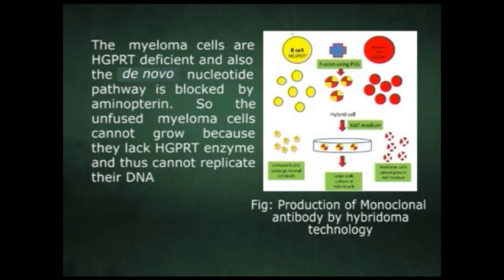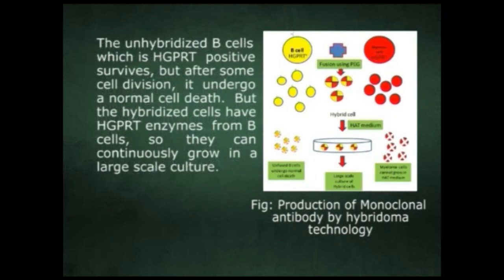The selected medium is HAT medium, containing hypoxanthine, aminopterin, and thymidine. The myeloma cells are HGPRT-deficient, and the de novo nucleotide pathway is blocked by aminopterin, so unfused myeloma cells cannot grow because they lack the HGPRT enzyme and thus cannot replicate their DNA. Unhybridized B cells, which are HGPRT positive, survive but undergo normal cell death after some cell divisions. The hybridized cells, however, have HGPRT enzymes from B cells.